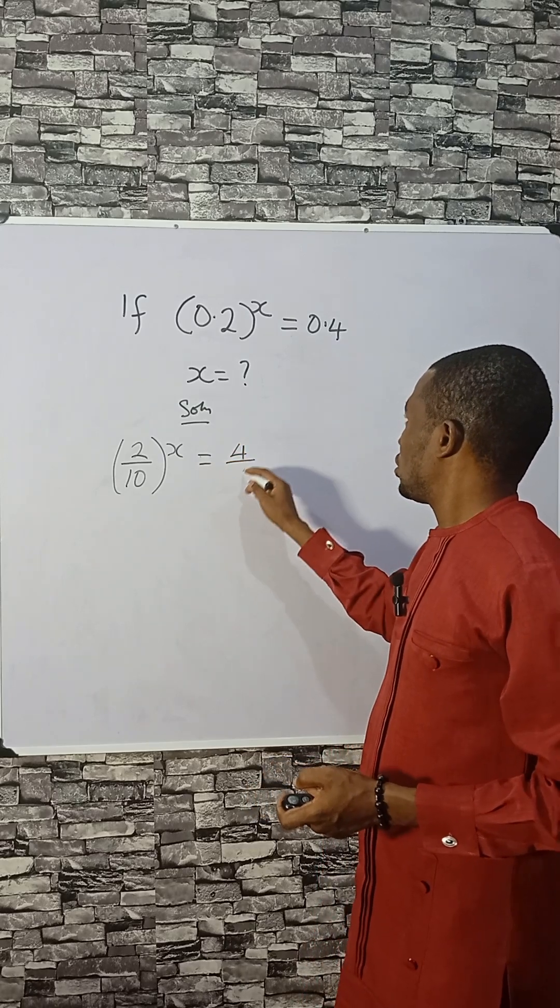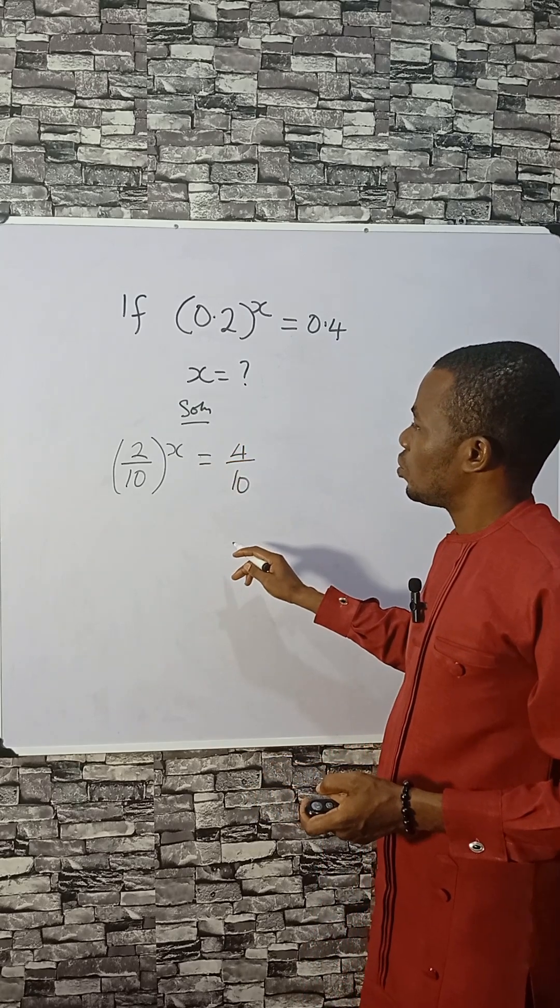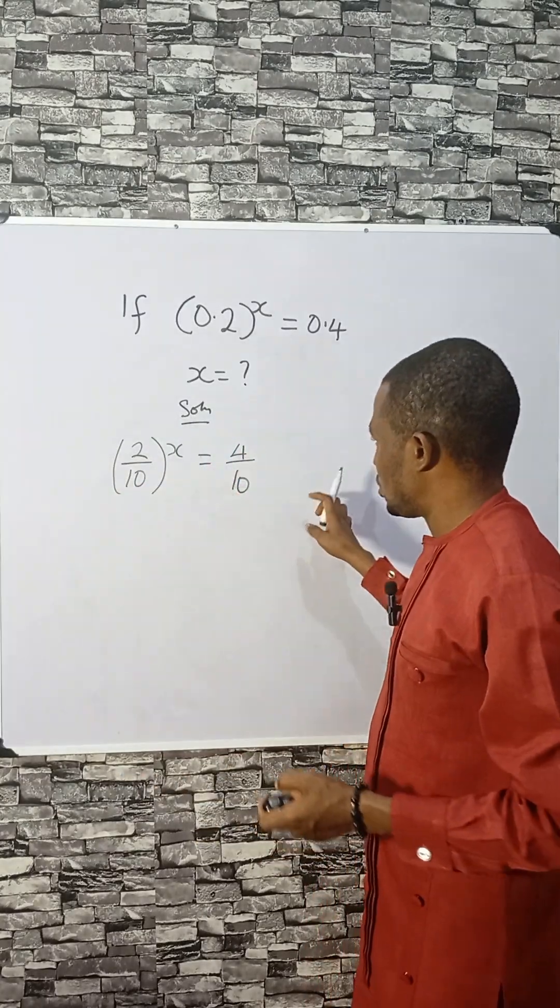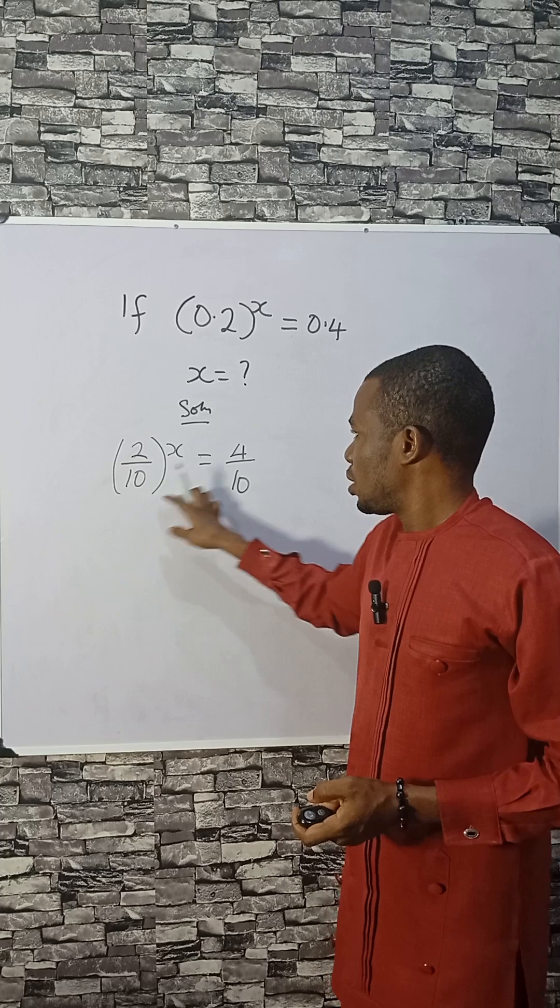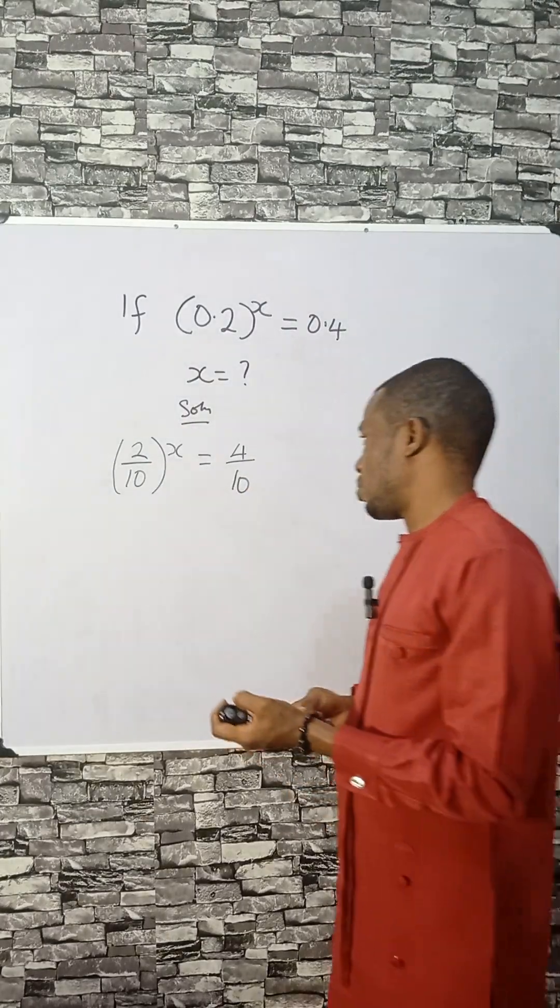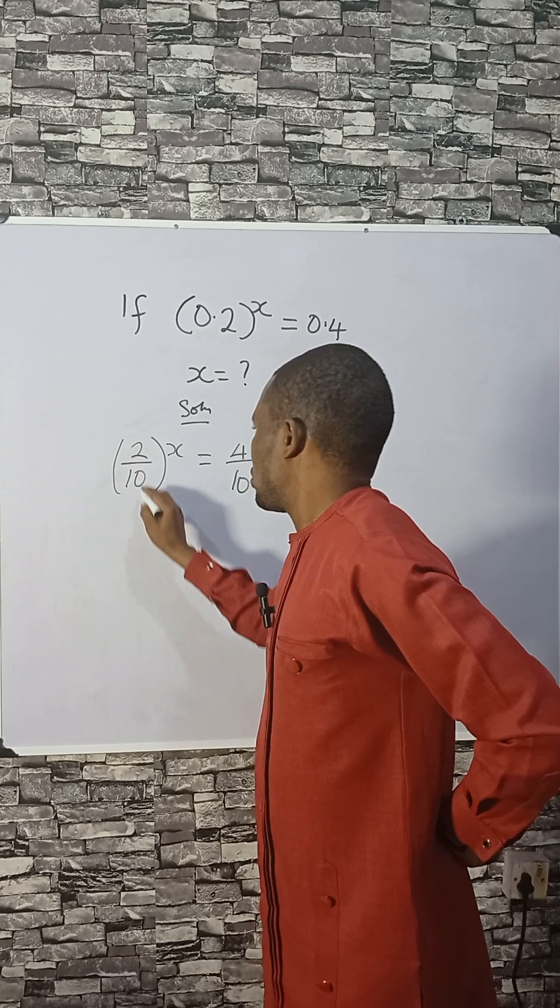Then this is 4 divided by 10 as well. But if they had the same base, it would be easier to equate the powers. Now here is 2 over 10 and here is 4 over 10. We cannot equate the powers because these are not the same. We can further reduce this to be 1 over 5.